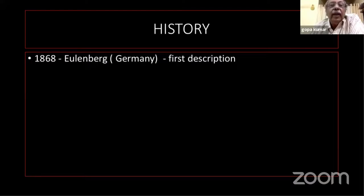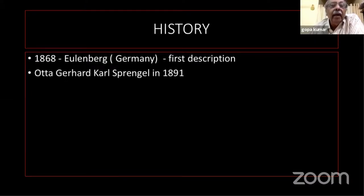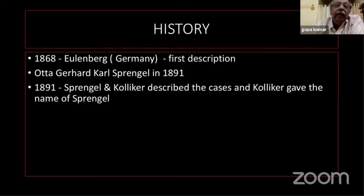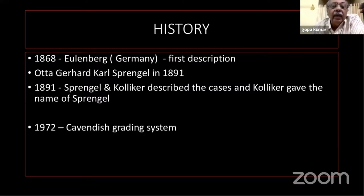Regarding the history of Sprengel's shoulder, it was first reported in 1868 by Uhlenberg in Germany, and it is named after a letter by Otto Gerhard Karl Sprengel in 1891. It was Sprengel and Kohlinger who described the lesion, and Kohlinger gave the name of his elder, Sprengel. The main classification system came in 1972 by Cavendish.